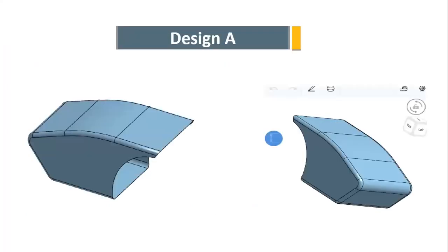The first design selected is from a research paper by the University of Perugia's Formula Student team, which was the best-performing team from that university. We referenced their nose cone dimensions and adjusted them according to our chassis and preferences. We chose this design to analyze how it works and how it could improve our vehicle's performance.